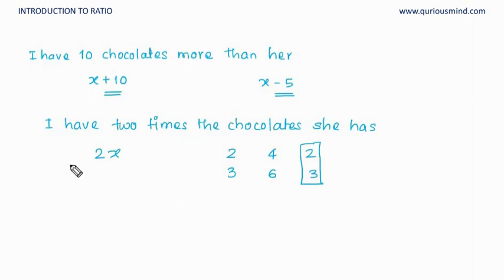Because what we are talking about is two times, and we don't have an absolute value but we have a ratio. Hence these kind of comparisons can also be written in the format as my chocolates to her chocolates are going to be 2 is to 1. This is called ratio. This is a relative comparison, not an absolute comparison.